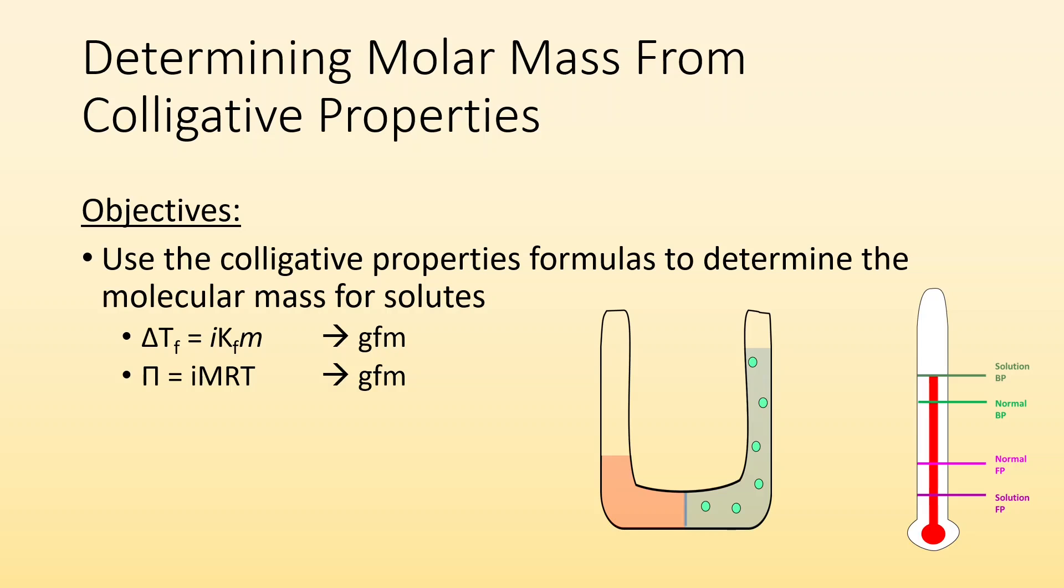So, we're going to look at the freezing point depression equation. How do we go from this to get the GFM, or gram formula mass, and the osmotic pressure, pi equals IMRT. How do we go from that to getting the gram formula mass?